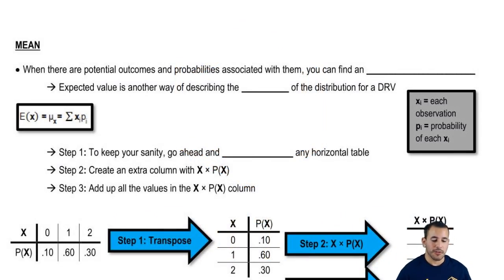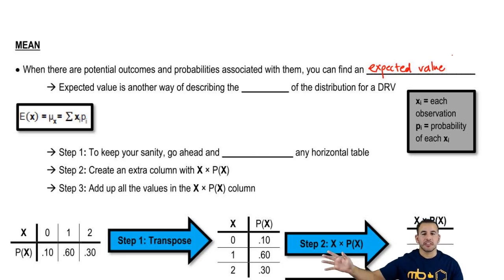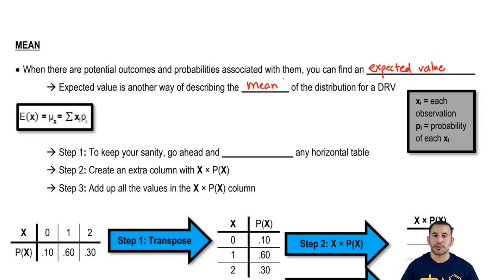When there are potential outcomes and probabilities associated with them, and we know those probabilities, we can find an expected value. An expected value or what we expect to get, for example, what's the expected outcome, given, let's say we tried this a couple times, what's some possible kind of expected value, what should we expect to get?